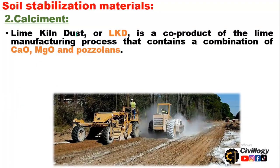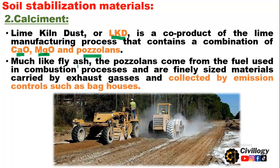Lime kiln dust, shortly called LKD, is a co-product of the lime manufacturing process that contains a combination of calcium oxide (CaO), magnesium oxide, and pozzolans. Much like fly ash, the pozzolans come from the fuel used in the combustion process and are finely sized materials carried by exhaust gases and collected by emission controls such as bag houses.